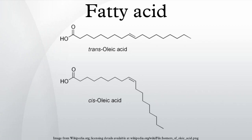Short-chain fatty acids are fatty acids with aliphatic tails of fewer than 6 carbons. Medium-chain fatty acids are fatty acids with aliphatic tails of 6 to 12 carbons, which can form medium-chain triglycerides. Long-chain fatty acids are fatty acids with aliphatic tails of 13 to 21 carbons. Very long-chain fatty acids are fatty acids with aliphatic tails longer than 22 carbons.